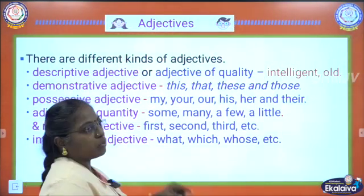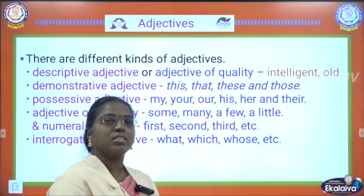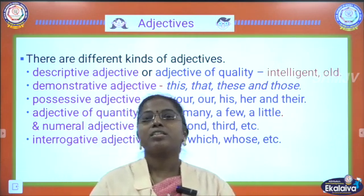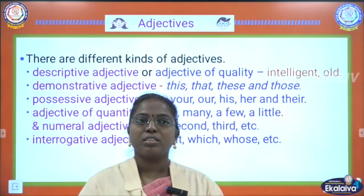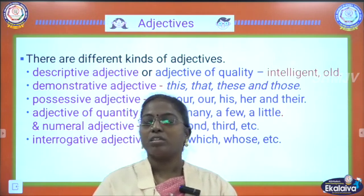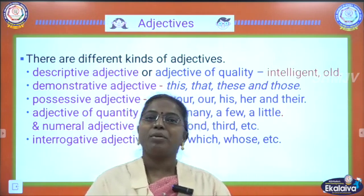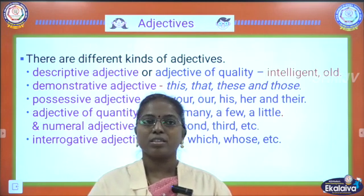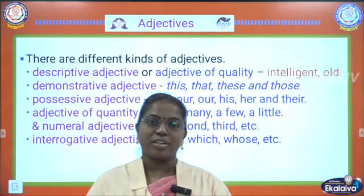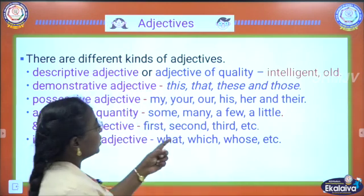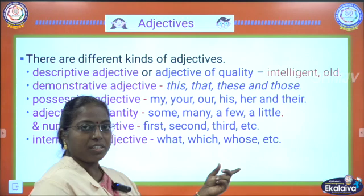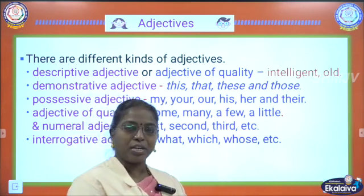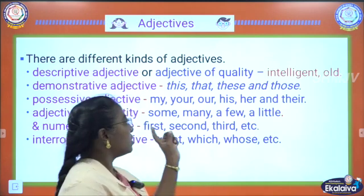Then descriptive adjective. Descriptive adjective is nothing but adjective of quality. We describe whether the boy is intelligent or clever, whether the man is old or young — we are describing about the person. That is descriptive adjective, otherwise called as adjective of quality. Intelligent, old, clever, bravery — we are describing about the person, place or thing. So that is descriptive.